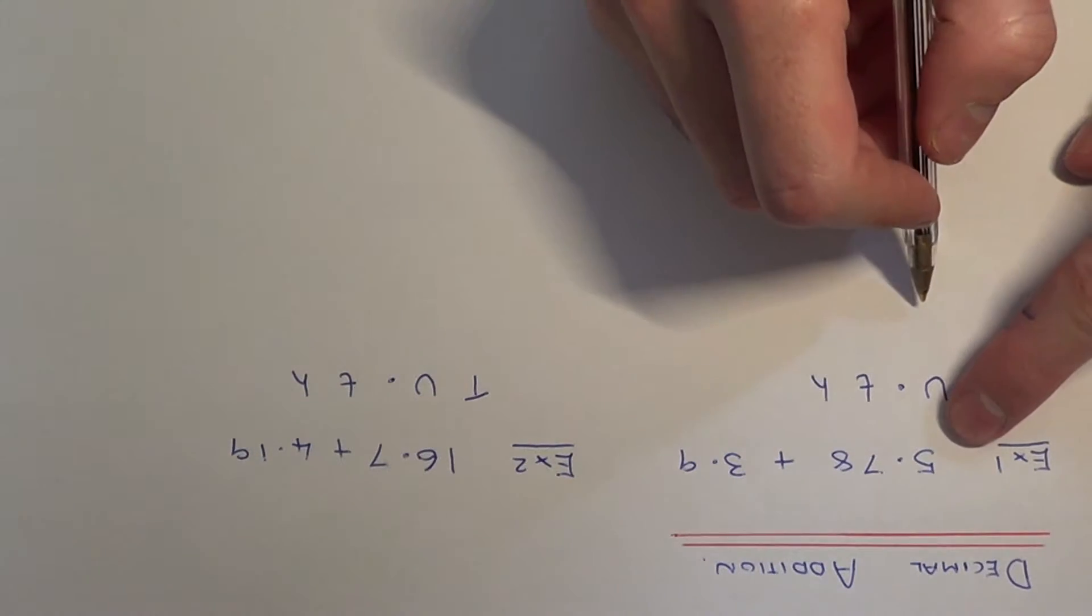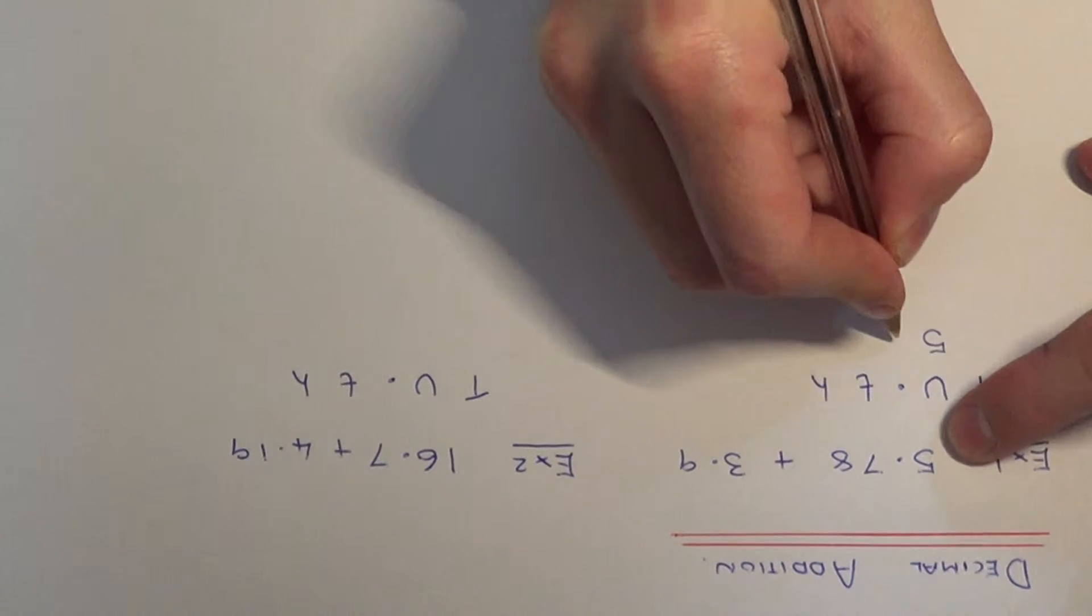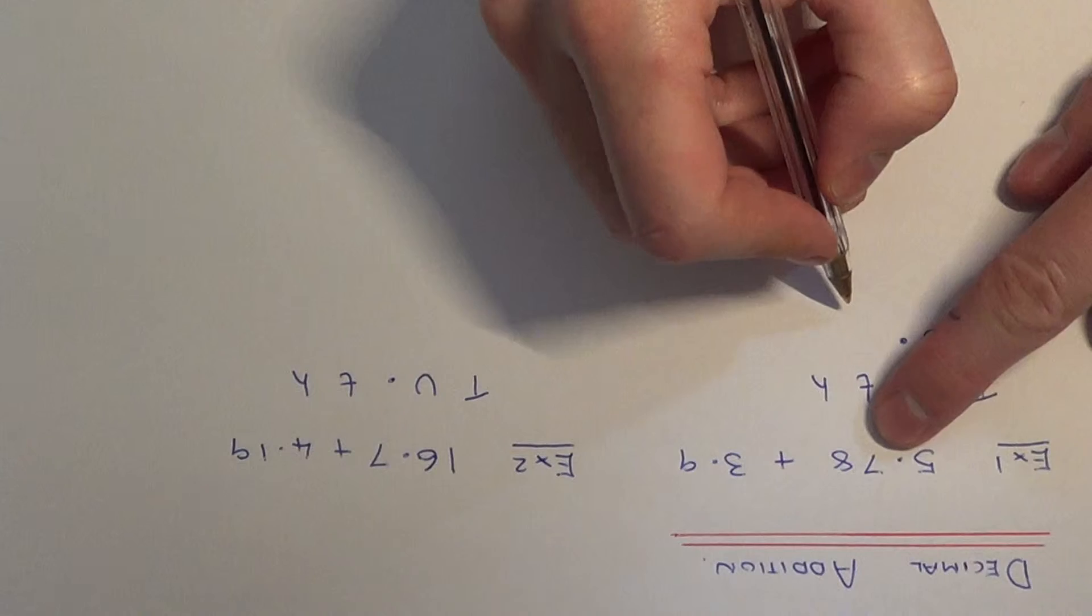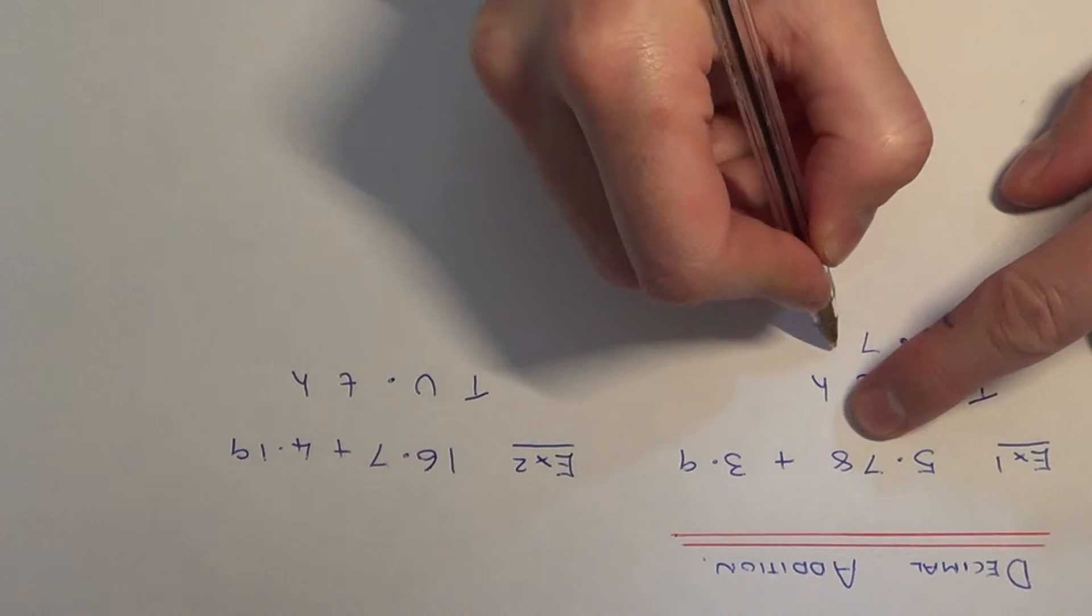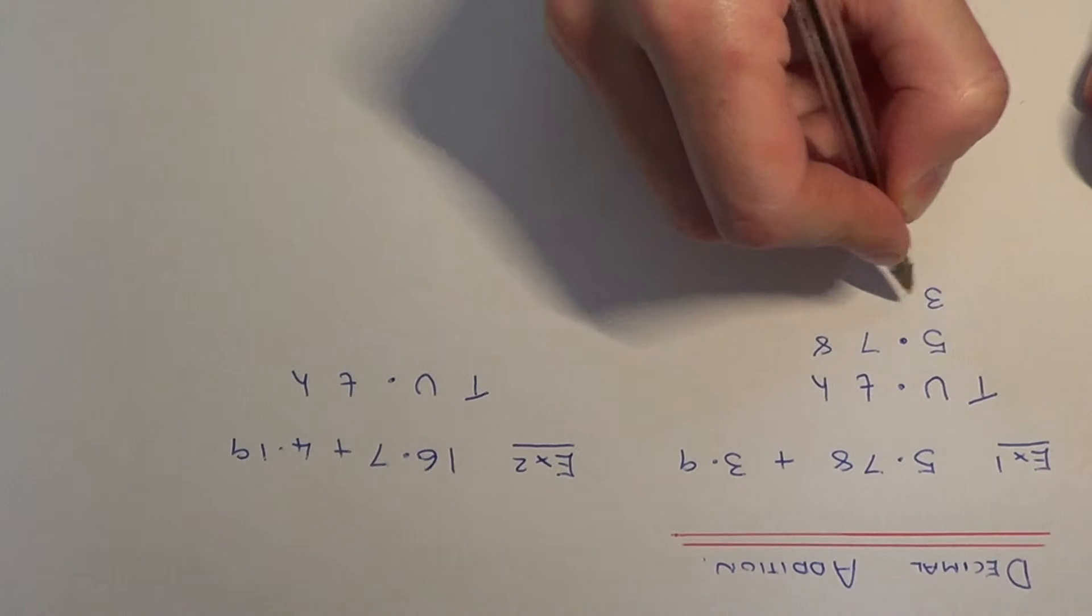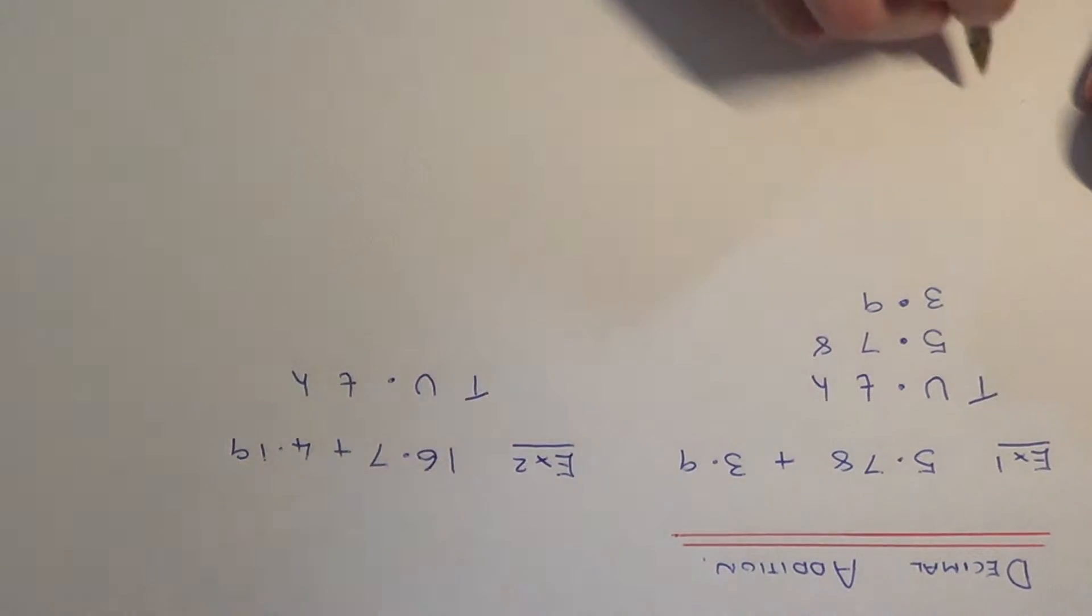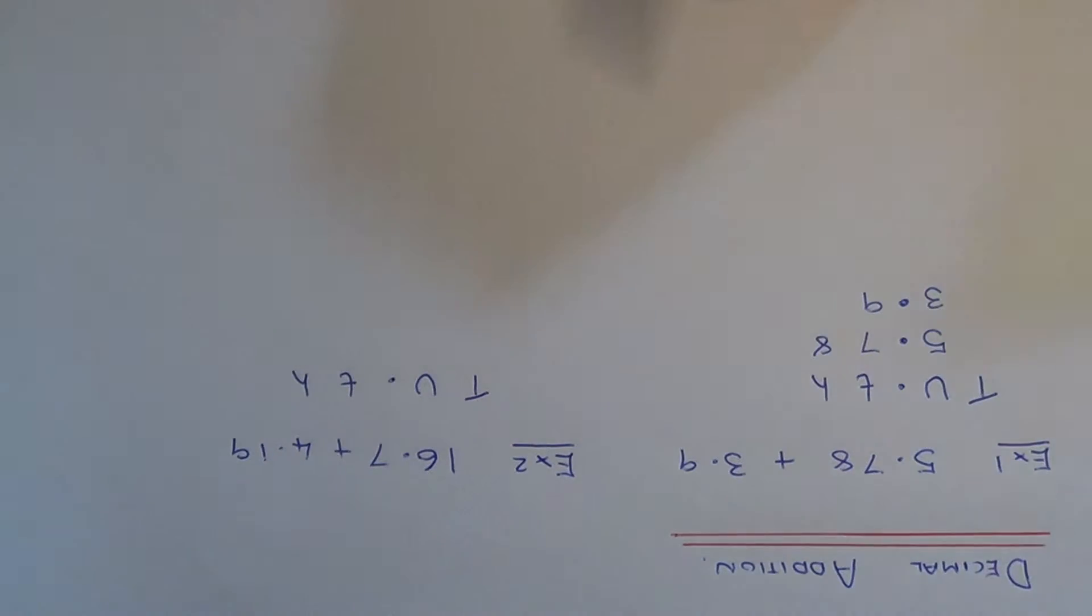First of all, insert your numbers into the correct columns. We have 5 units, then our decimal point, 7 tenths and 8 hundredths. Our second number has 3 units and 9 tenths. We've lined the numbers up into the correct columns.